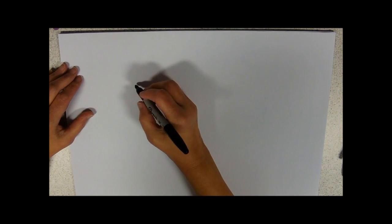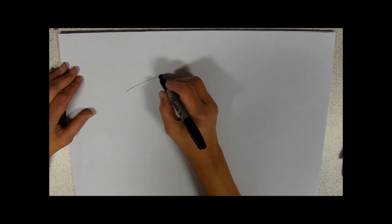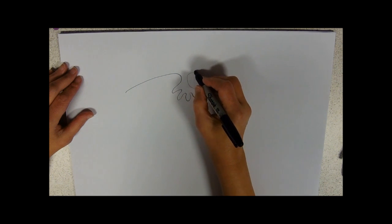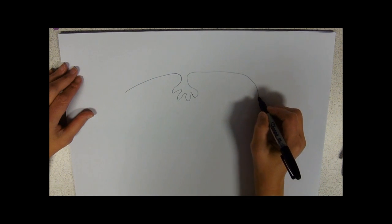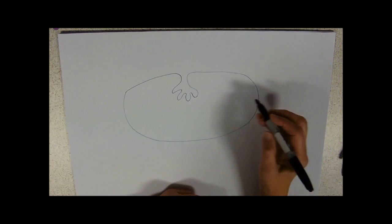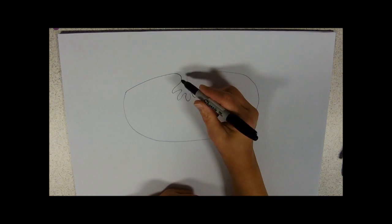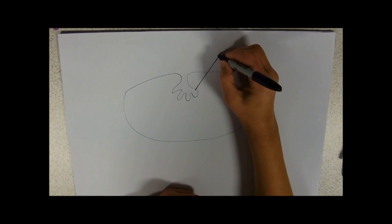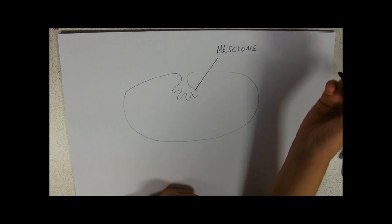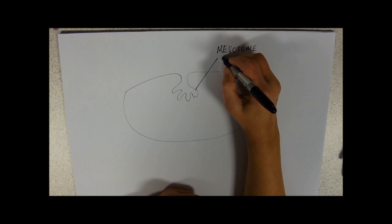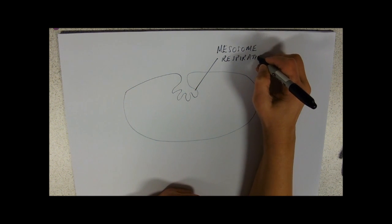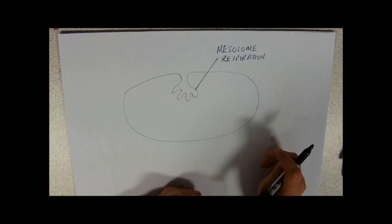Prokaryotes are bacterial cells, and they are cells, so they're not acaryotic like viruses, which means they've got a cell membrane going right the way around the outside of the cell. We've deliberately done this cell membrane with a little infolding, and that infolding is called a mesosome. We need to know its function - it carries out the function of respiration. This is the one involved in energy release.